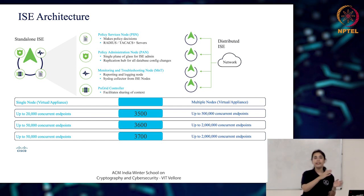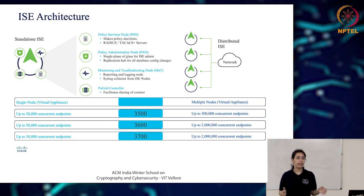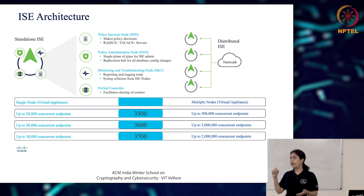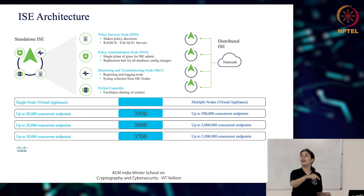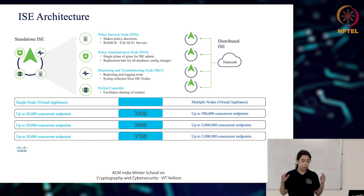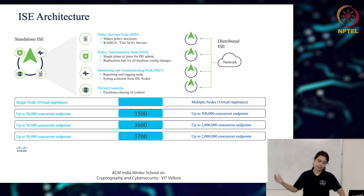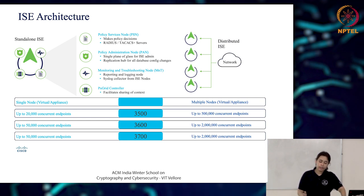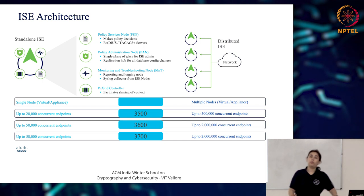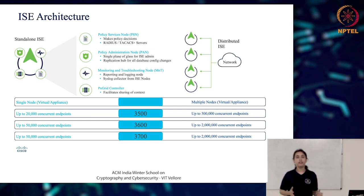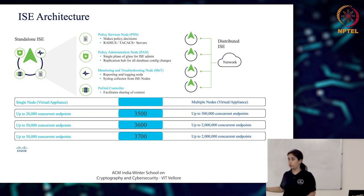The Policy Administration Node ensures all the rules you configure are synced to all other nodes. It is the administrator — as the name suggests — and it is the replication hub for all database configuration changes. Whatever you are configuring on the AAA server, you will do it on the PAN, the Policy Administration Node.